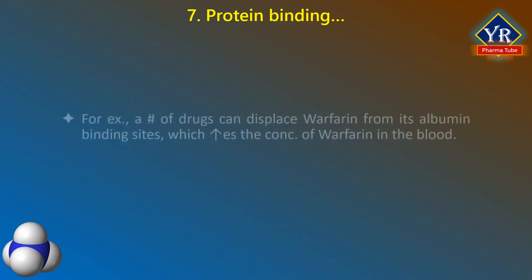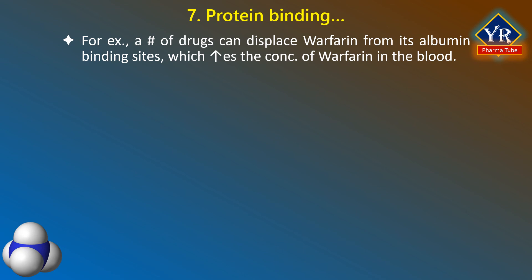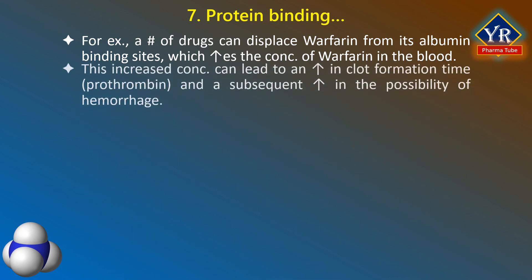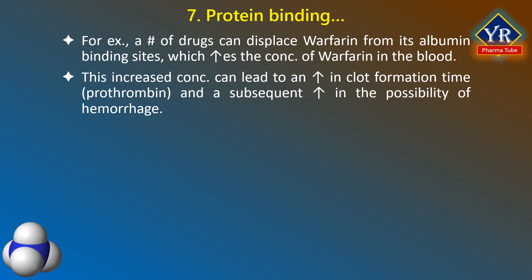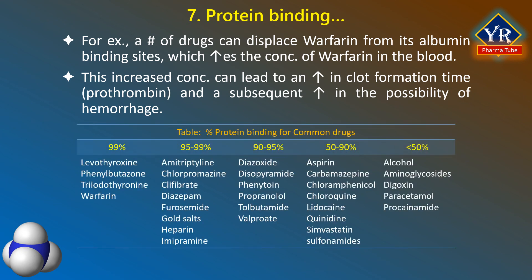For example, a number of drugs can displace warfarin from its albumin binding sites, which increases the concentration of warfarin in the blood. This increased concentration can lead to an increase in clotting time (prothrombin time) and a subsequent increase in the possibility of hemorrhage. The table shows some common drugs with their percentage of protein binding capacity.